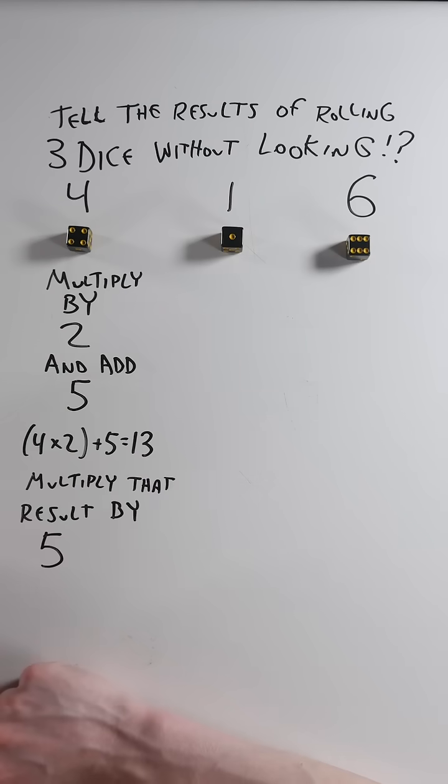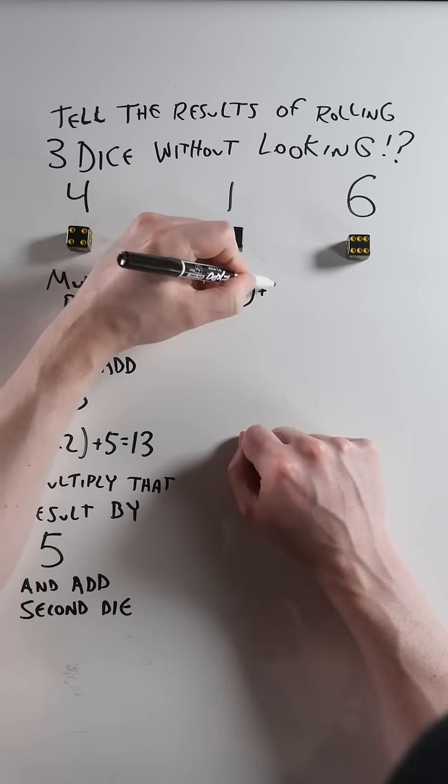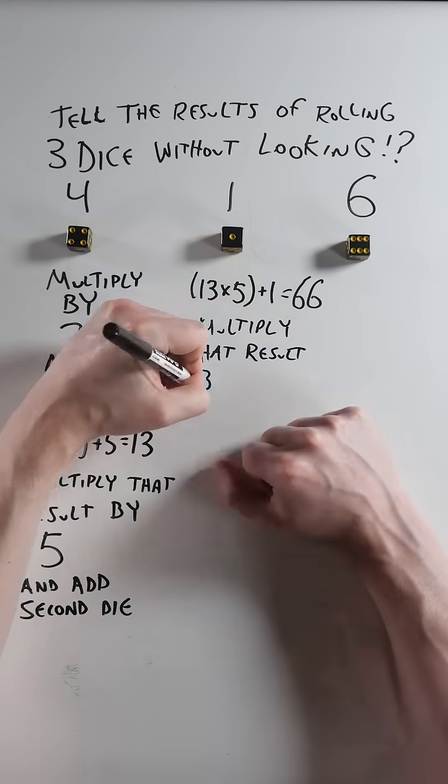Then multiply the result by five and add the number from the second die. Thirteen times five plus one equals sixty-six. Multiply that result by ten.